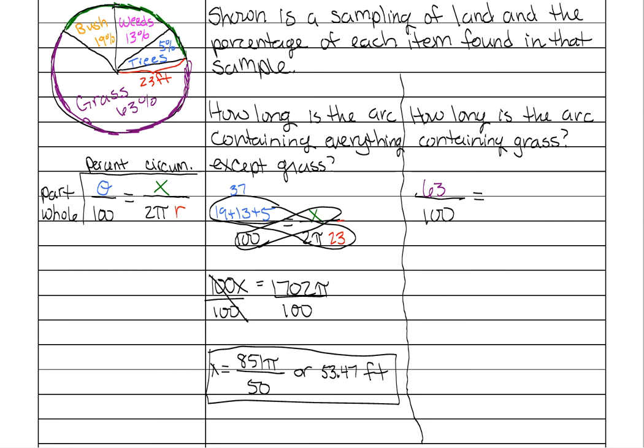And we already have that percentage at 63 over the entire percentage of anything, which is 100, which is equal to, and we're trying to find out how long that little piece of the arc is. Well, actually, it's a bigger piece. Over the whole circumference, which is 2π times 23.